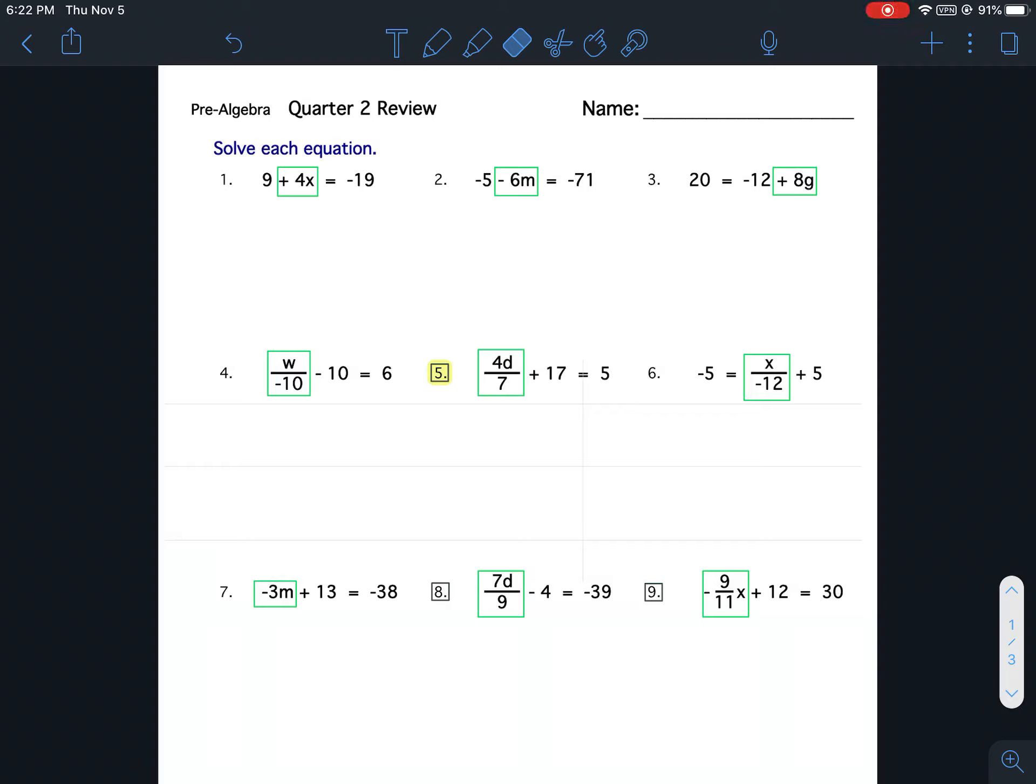The Quarter 2 Review. This worksheet is a review of everything we have done so far. Questions 1 through 9 are from the very first test. The very first test was called Expressions and Equations, and it was on Lessons A through C.